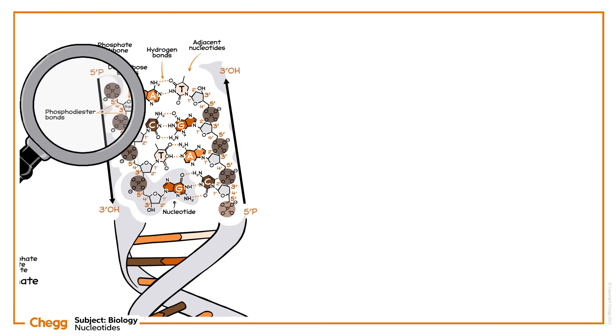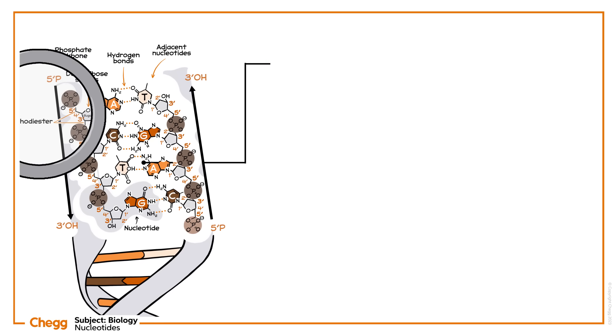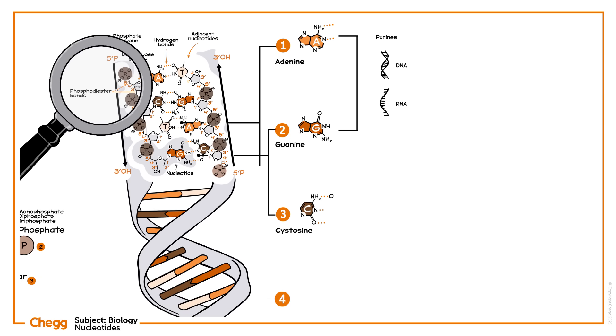Let's take a closer look at the four bases in DNA. Adenine and guanine are both purines, which are present in DNA and RNA. Cytosine and thymine are both pyrimidines. While cytosine is present in both DNA and RNA, RNA contains uracil instead of thymine. In DNA, adenine bonds with thymine, and guanine bonds with cytosine.